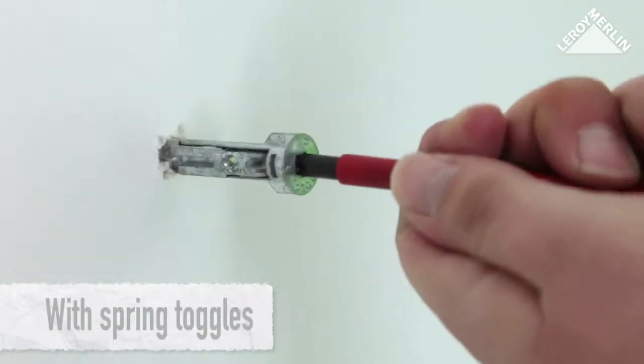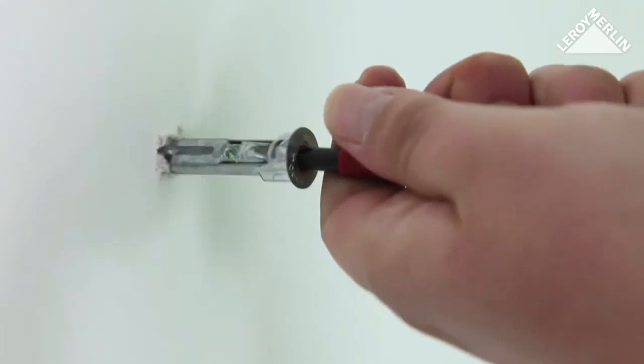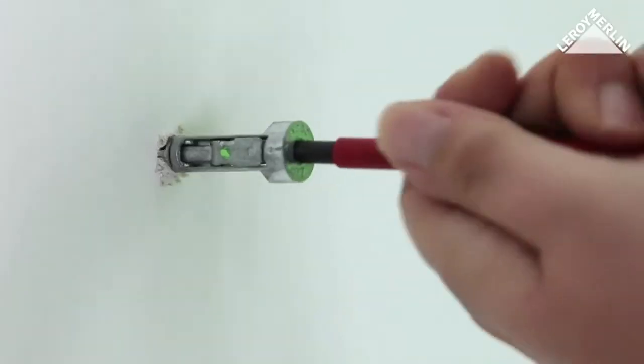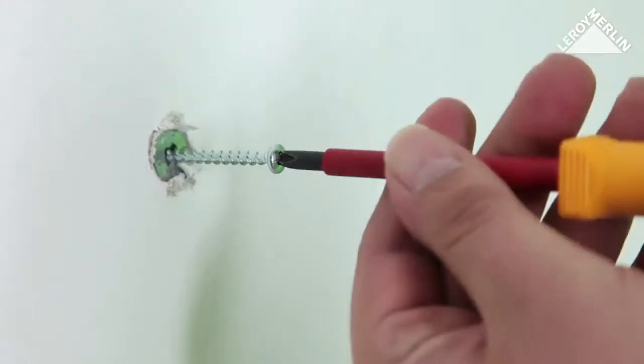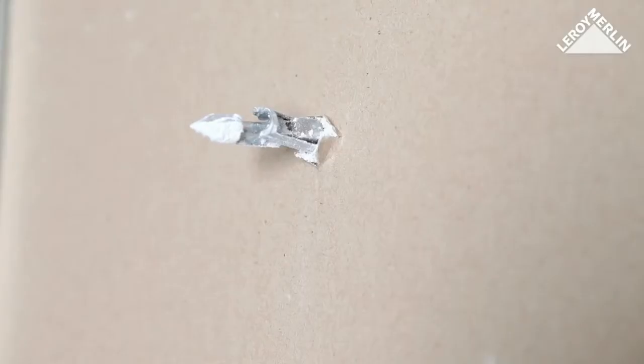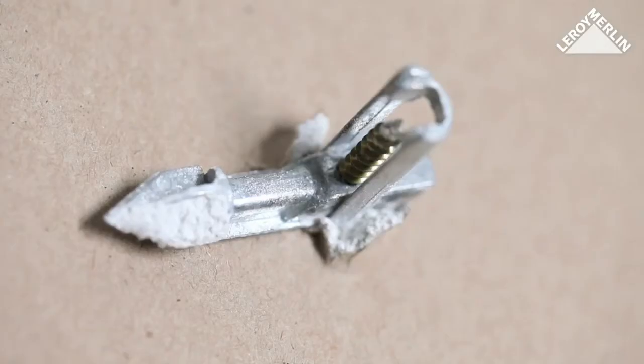Here too, the plug is screwed directly into the wall without drilling. Then inserting the screw makes the toggle open inside the enclosure and flatten against the wall.